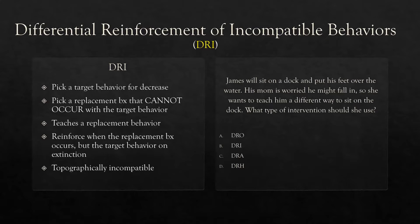DRI — differential reinforcement of incompatible behaviors. You can consider DRI kind of the brother or sister of DRA. They're similar, but there's one major difference, and the major difference is in the name. Differential reinforcement of incompatible behaviors — what does incompatible mean? It means it can't occur at the same time; it doesn't go together. That's exactly what we're doing with DRI. We're picking a target behavior for decrease and a replacement behavior that cannot occur with the target behavior — in other words, they're topographically incompatible.